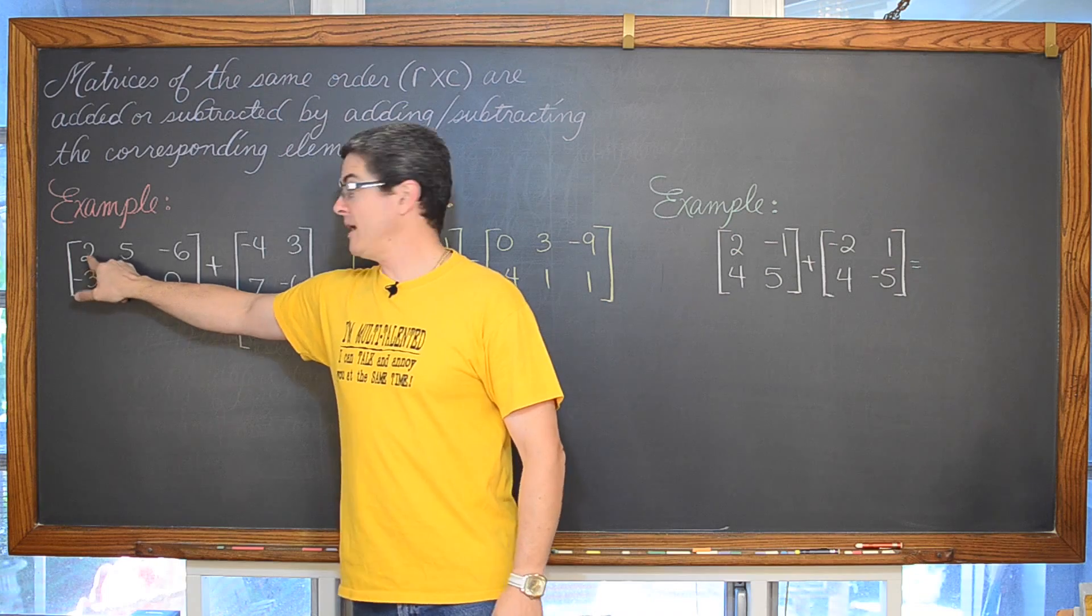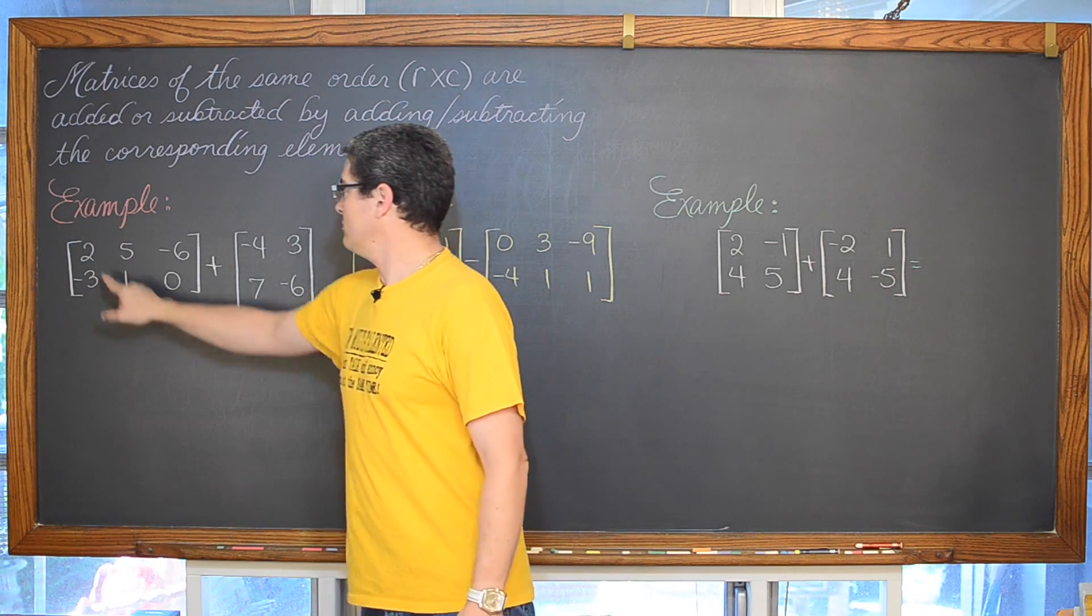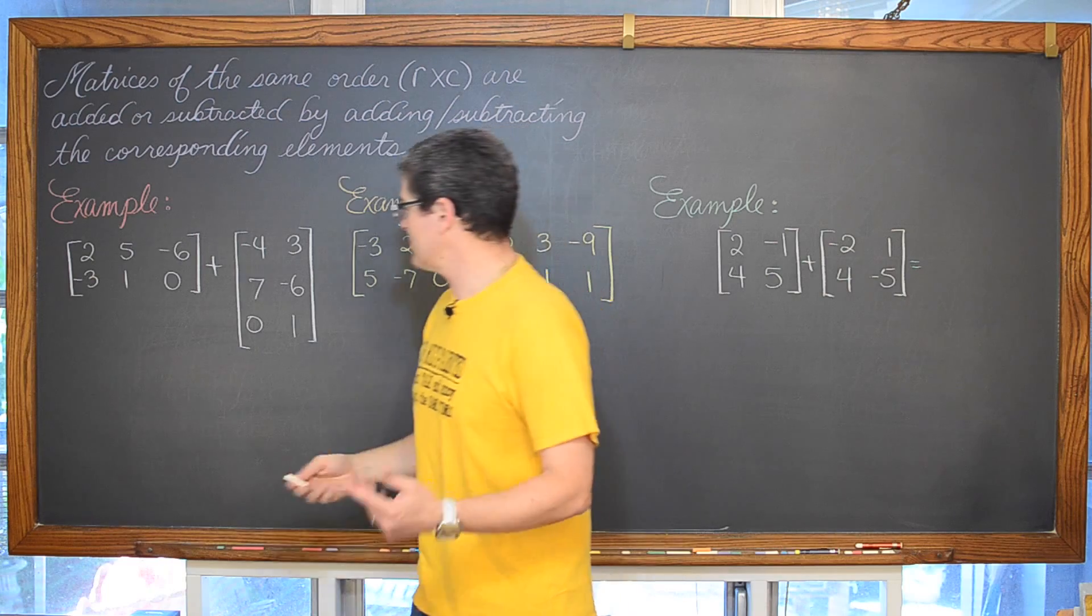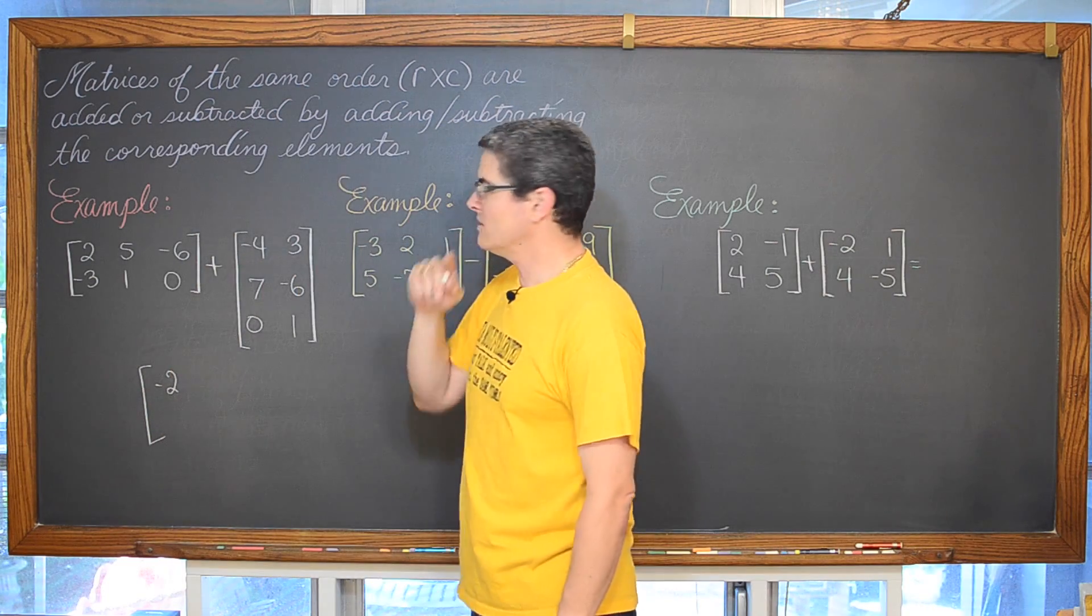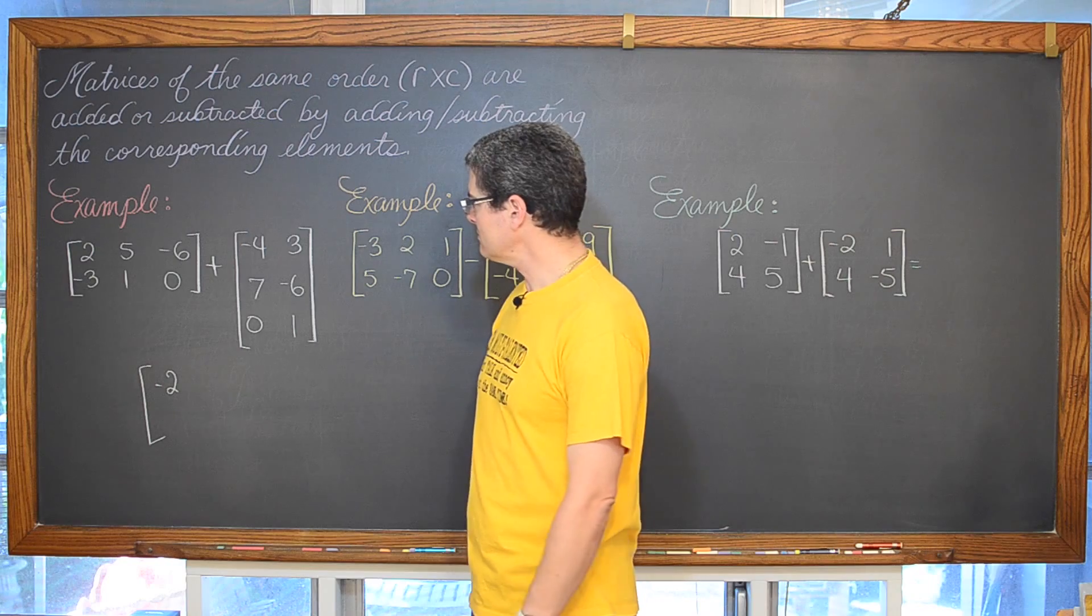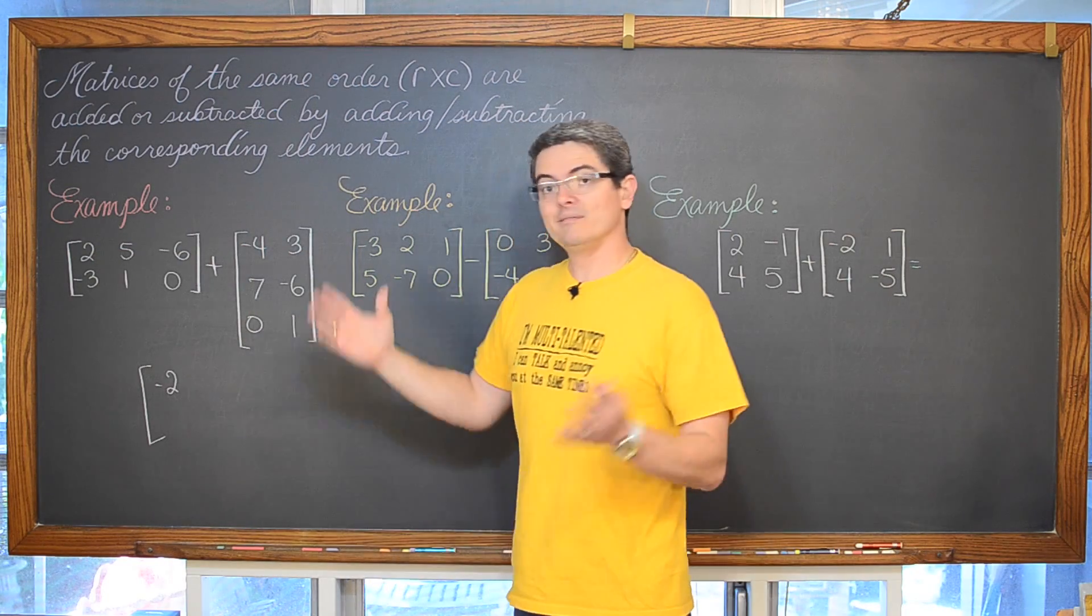So we have first row and first column and first row and first column. Two plus negative four is going to be equal to negative two. Oh, wait a minute. I just added those corresponding elements but that ain't right.